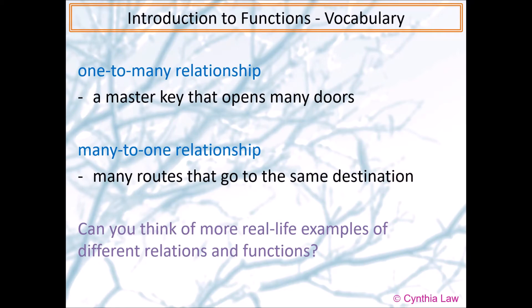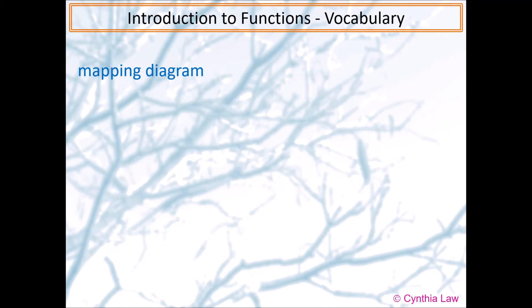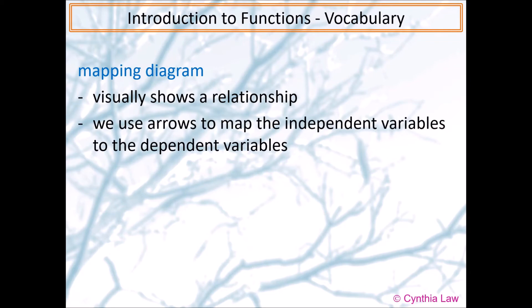Can you think of more real-life examples of different relations and functions? Next, we'll talk about mapping diagrams. A mapping diagram visually shows a relationship. We use arrows to map the independent variables to the dependent variables.